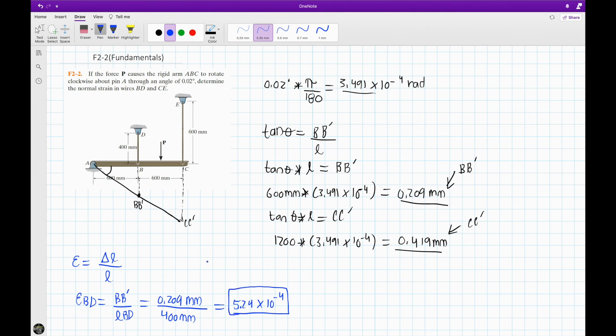Now we calculate in a similar way the strain for CE. Our strain for CE is equal to CC divided by the original length CE. For CC, we got 0.419 millimeters divided by our original length, which is 600 millimeters. Plug this in the calculator and we get 6.88 times 10 to the -4.